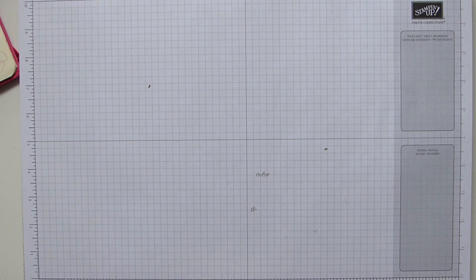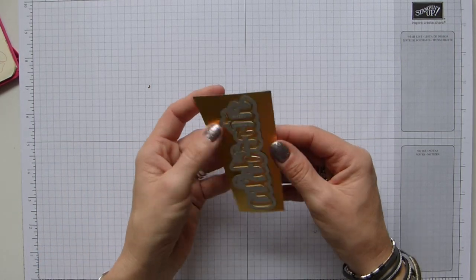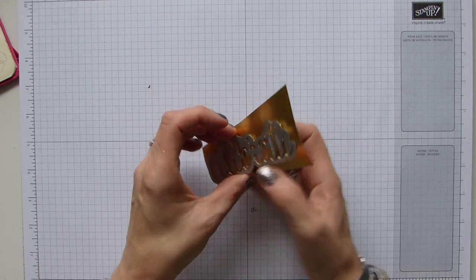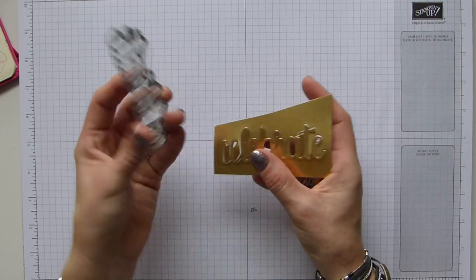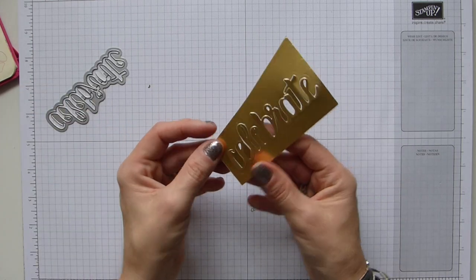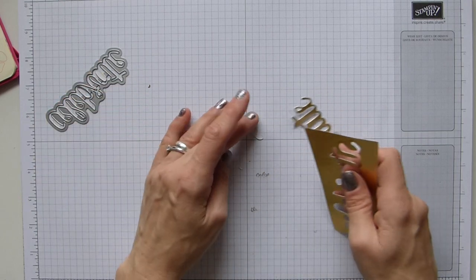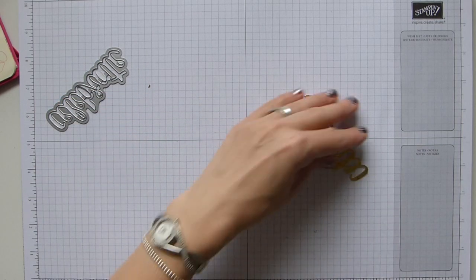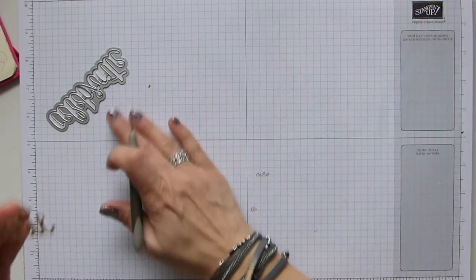So I've run that through with my precision base plate. This just pretty much comes out straight away anyway, and then you can just take it out of the bit you've cut. And then I just have a couple of little bits here that I need to just pop out. So there is my gorgeous die cut.